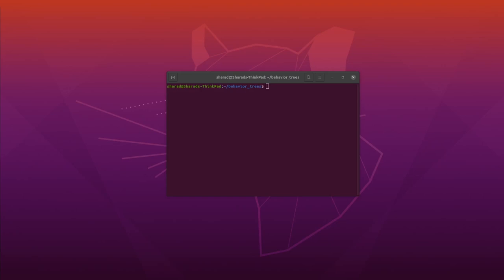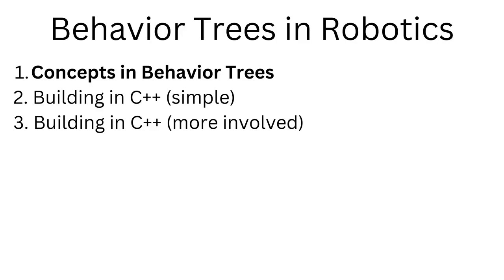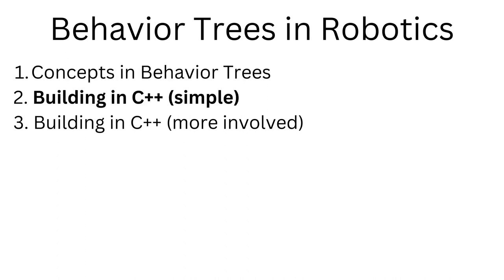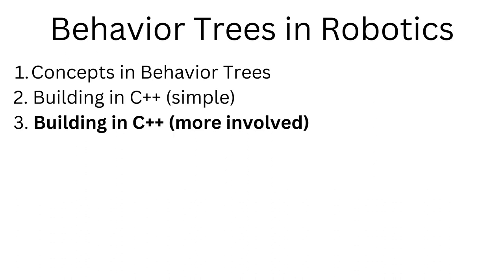Welcome back to the third part of this series on behavior trees. In the first part, we understood what a behavior tree is and why we need it, along with all the concepts behind behavior trees. In the second part, we started building a behavior tree from scratch in C++ using a library called BehaviorTree.CPP. That was a simpler example. In this video, we will build a more involved example of a behavior tree for a robot application in C++. But before that, let's talk about what we already built and what we will build today.